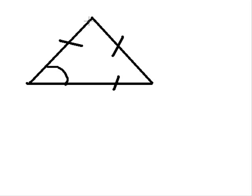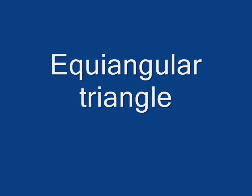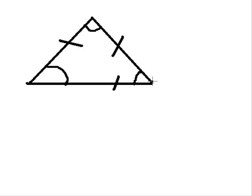And all the angles are equal, so it's an equiangular triangle. They're all equal. What does that mean? Well, the sum of all the angles equals 180. 180 divided by 3 is 60, so each one of these is 60 degrees.